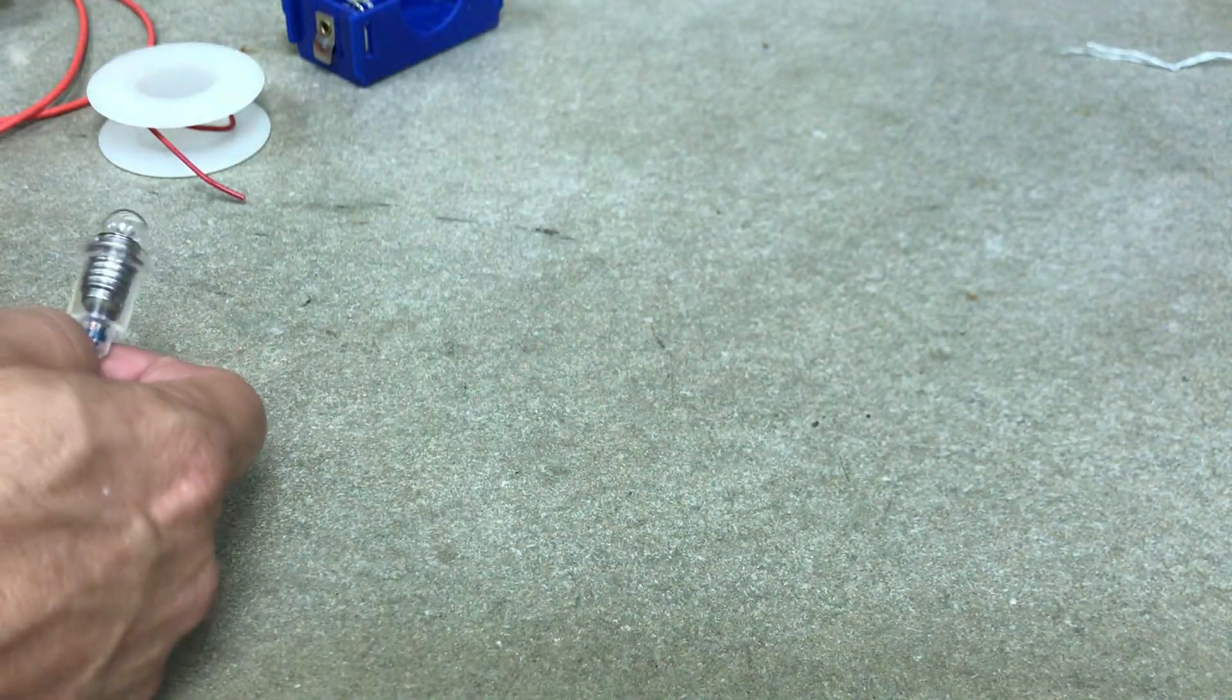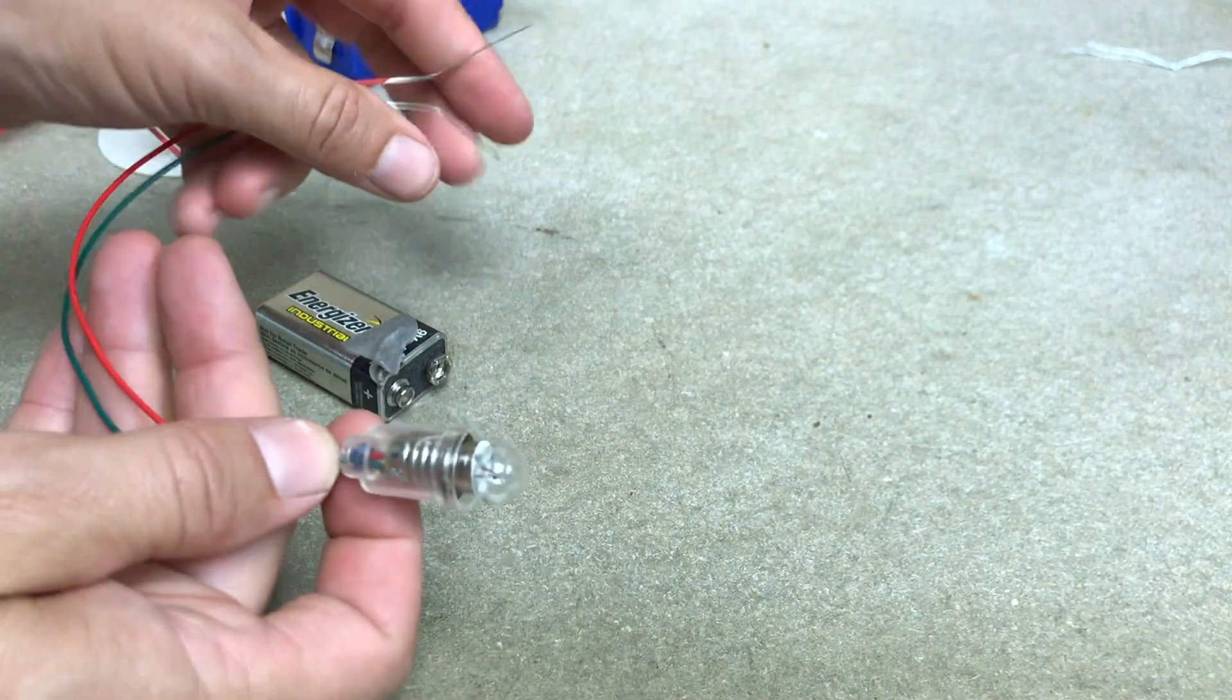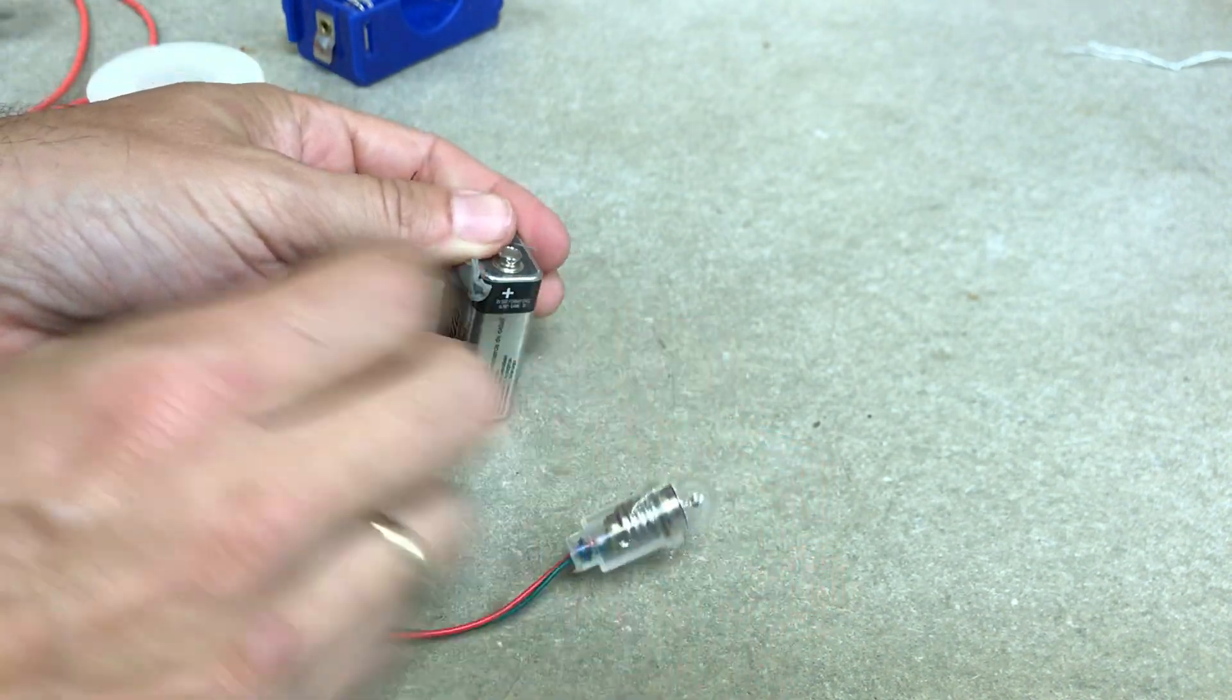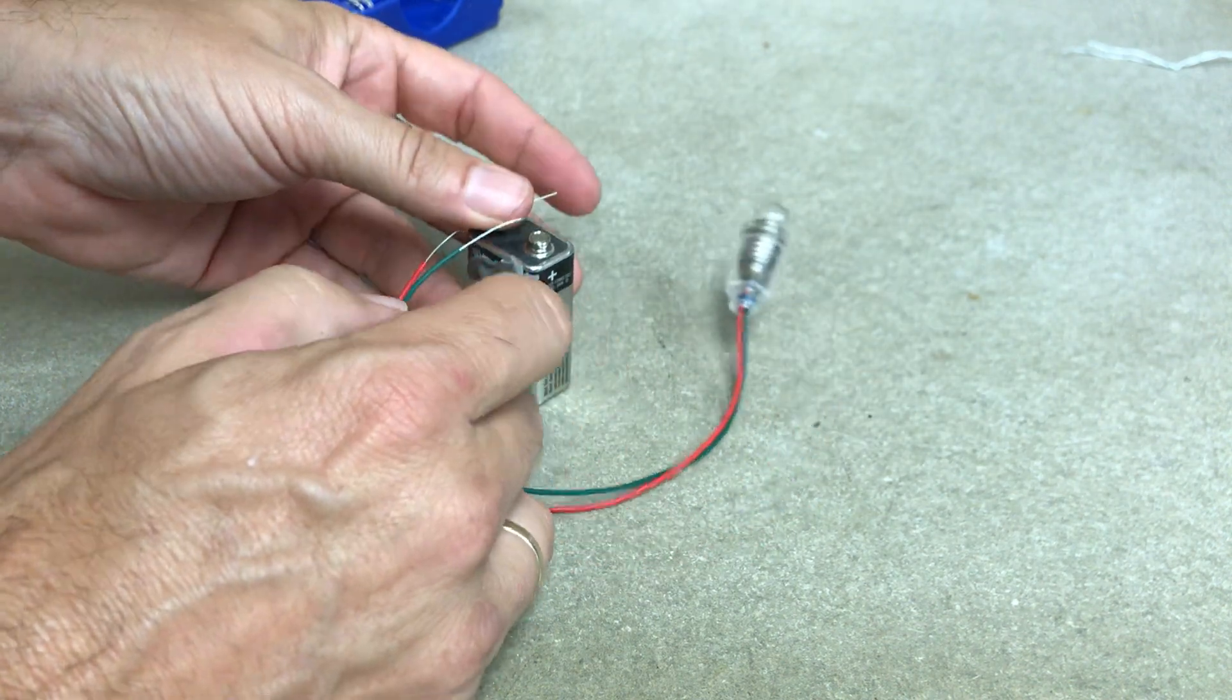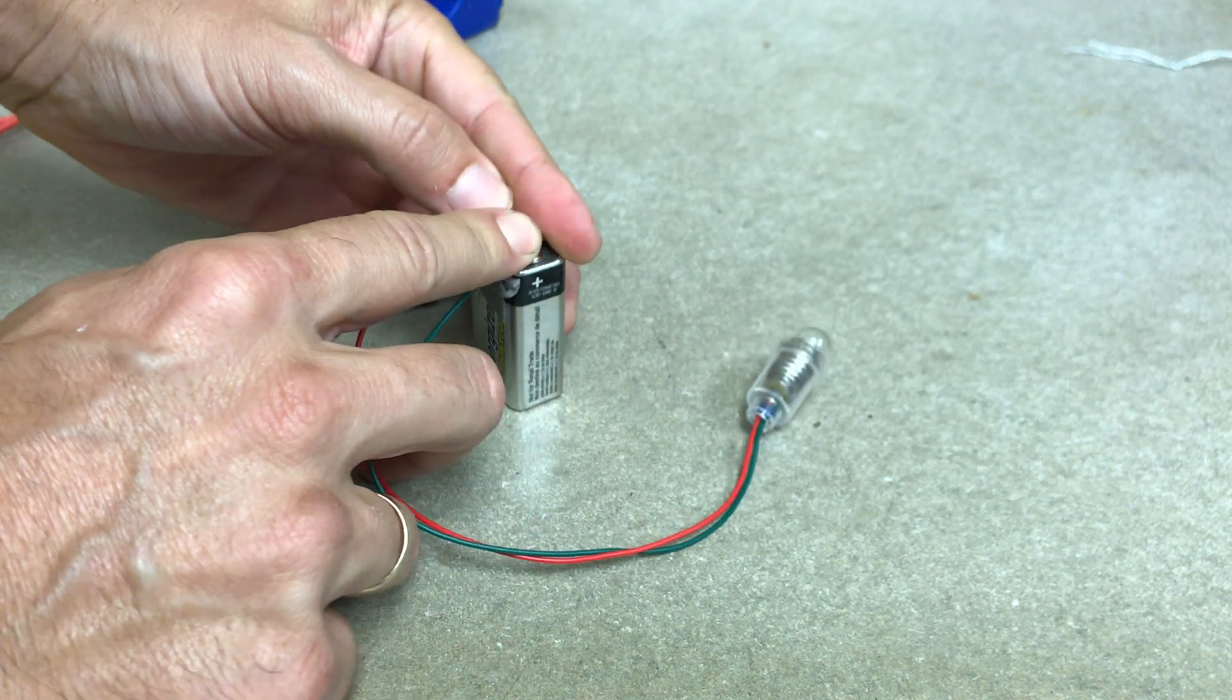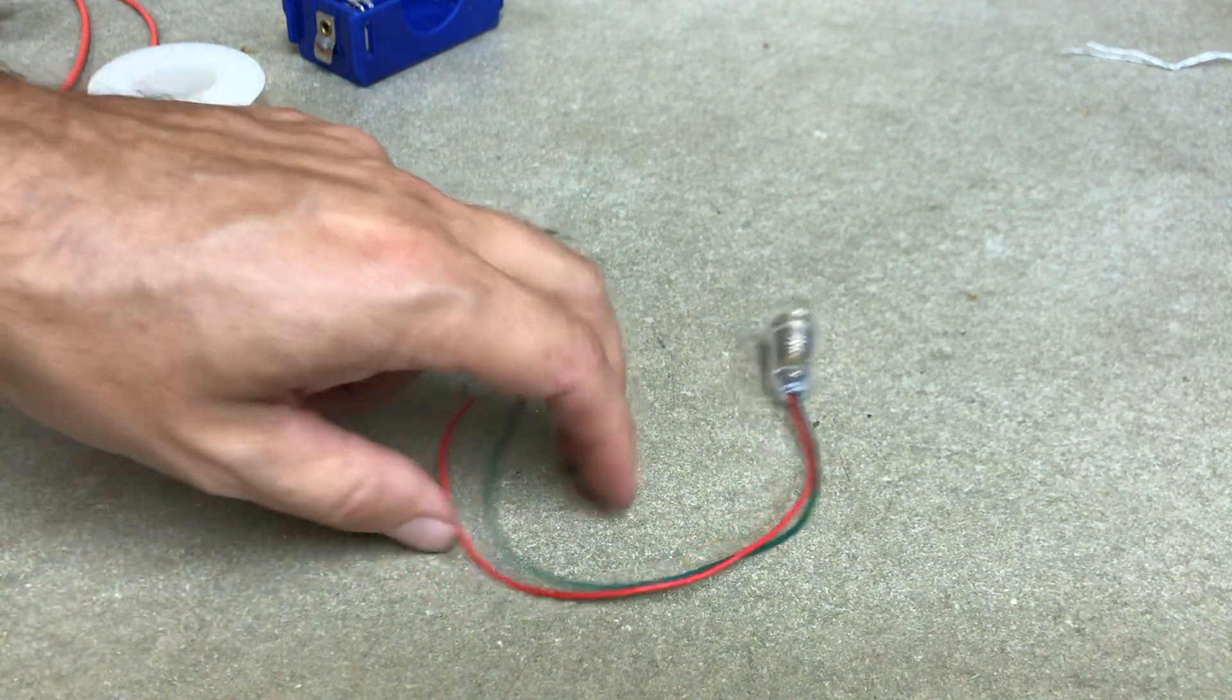If I use one end of my 9-volt battery, it'll be 9 volts. It should be close enough to get it to light. Let's see. So I'm just going to hold these two things. One wire right here. Okay. That's not, I think I have a dead battery. That's why that didn't work.